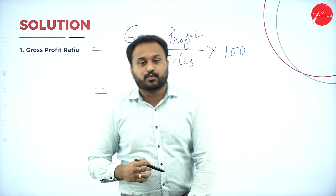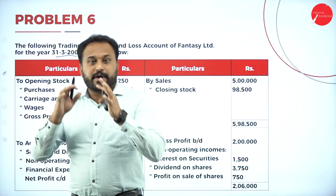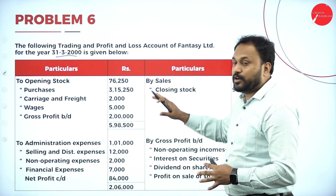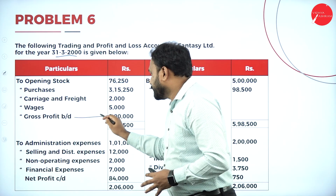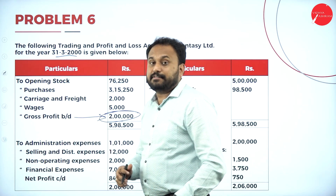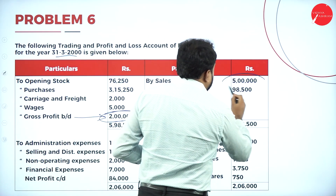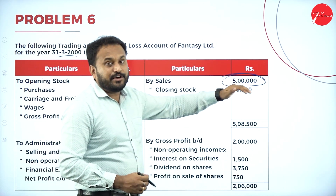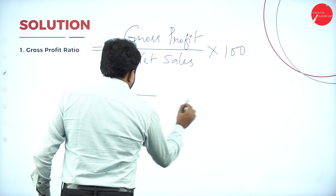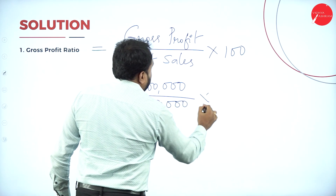Now we need to check what the Gross Profit is from the question. Looking at the question — Gross Profit brought down is 2 lakh. For Net Sales, there is no separate gross sales or net sales listed, only 'By Sales' which is 5 lakh. When there is no separate net sales figure, net sales equals sales — that is 5 lakh rupees. So: 2 lakh divided by 5 lakh.